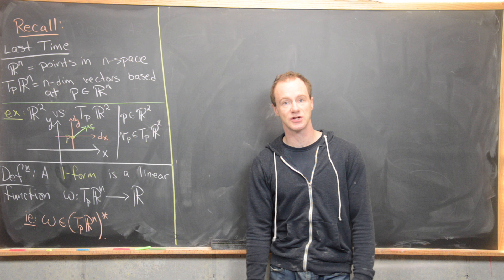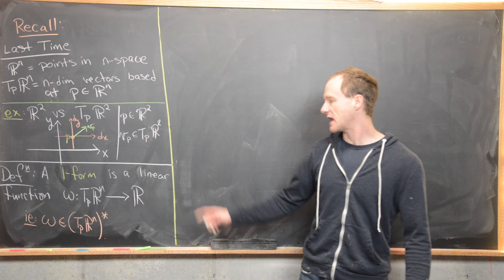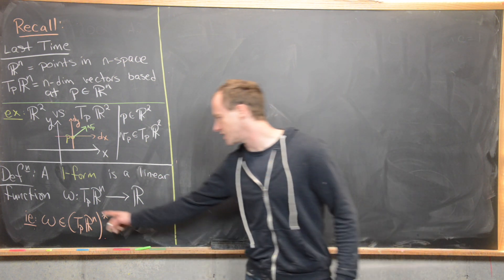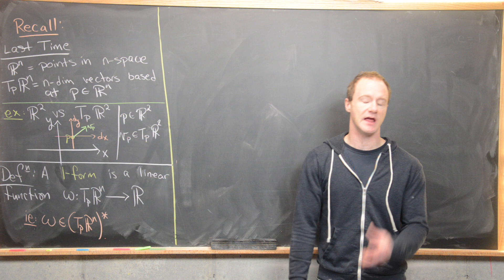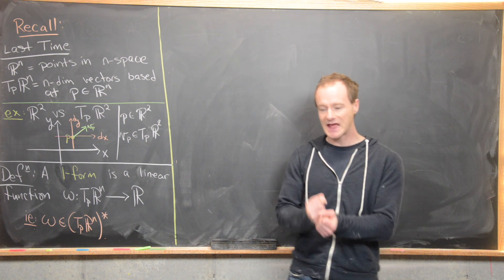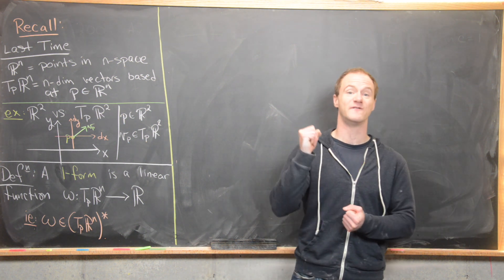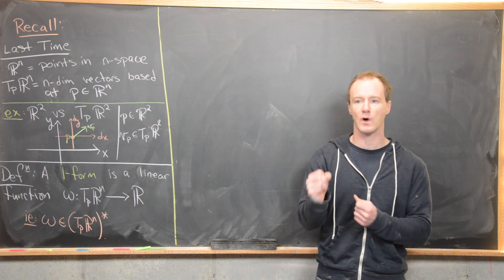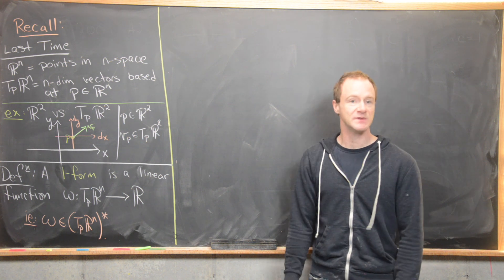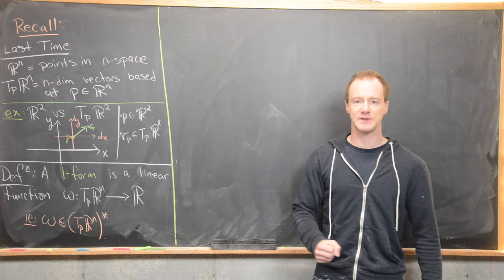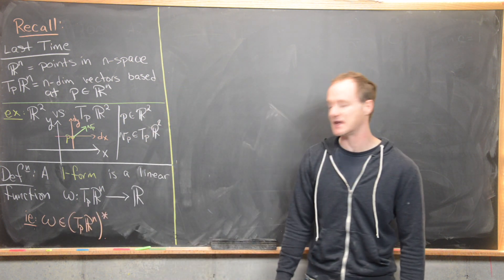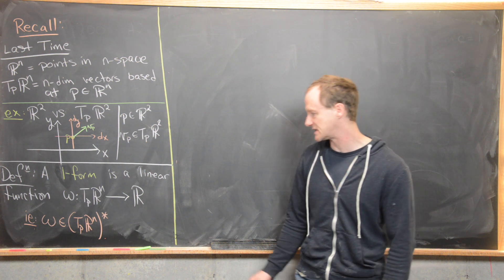So the next thing that we want to do is look at the notion of a one-form. Let's just look at the definition. A one-form is a linear function from T_p R^n, in other words from this tangent space, up to just the real numbers. So the inputs of a one-form are vectors, n-dimensional vectors depending on what dimension you're working in. And the outputs are just scalars. There's a bigger notion from linear algebra known as the dual space, and that's what I have right here. Omega is in the dual space of this tangent space.